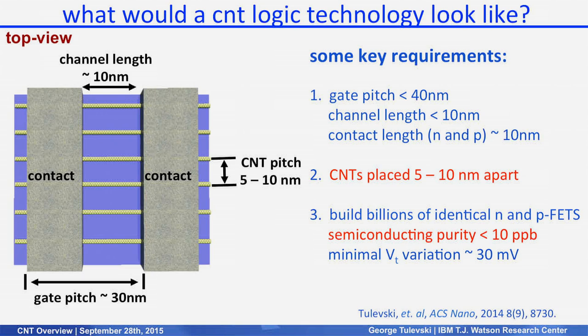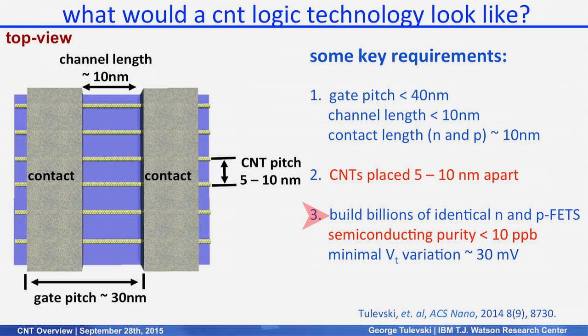What would the technology actually look like? Imagine one transistor replicated a billion times onto a chip. The gate pitch is around 40 nanometers for a 5-nanometer technology node, the channel length is about 10 nanometers with roughly 10-nanometer contacts, and the tubes have to be placed about five to ten nanometers apart to reduce capacitance — though you need multiple tubes per device to get the drive current where it needs to be. And since we need to make a billion of them, they all have to operate identically: semiconducting purity needs to be in the parts-per-billion range, and threshold voltage variation from device to device must be minimal.